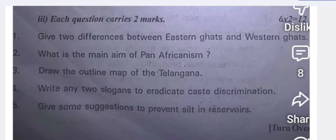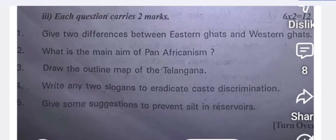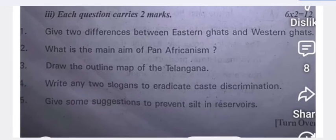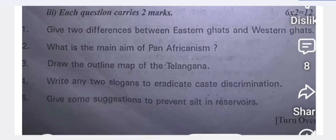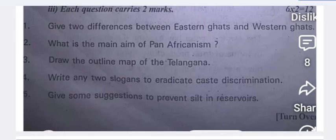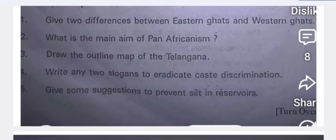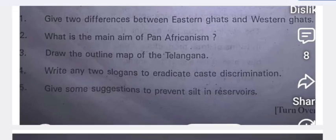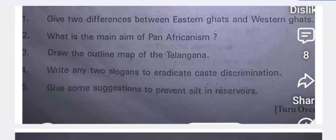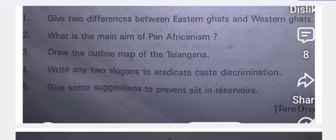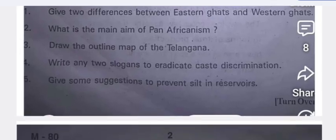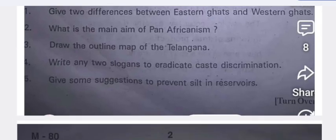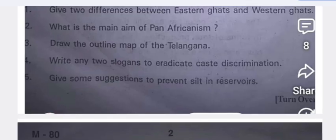Tomorrow the 10th class students are going to write the exam, so for that purpose this question paper is brought. Write two differences between eastern courts and western courts — eastern courts are on the eastern side and western courts are on the western side. You can write one more difference. What is the main aim of Pan-Africanism? Draw the outline map of Telangana.